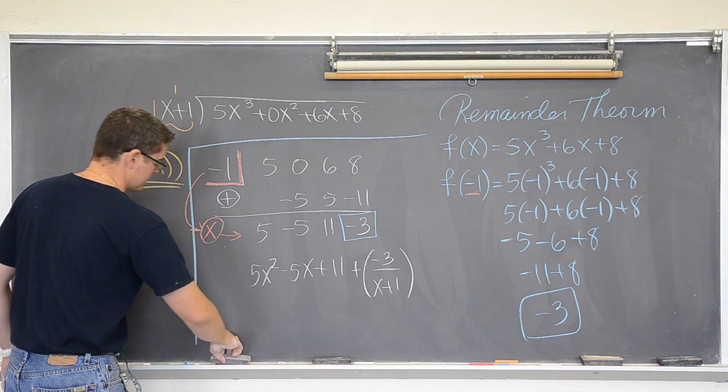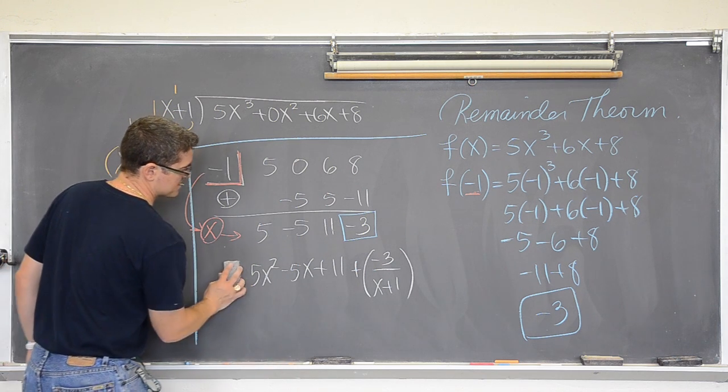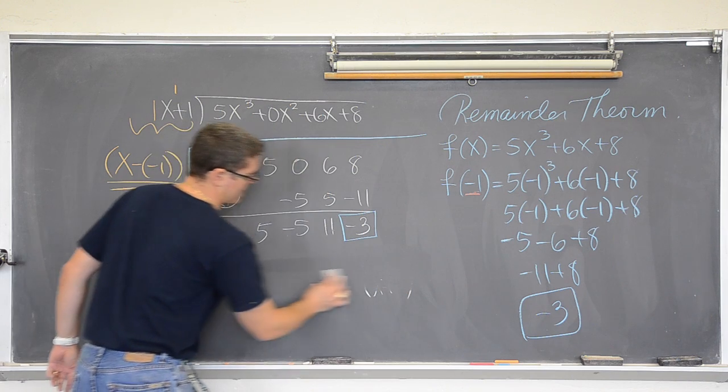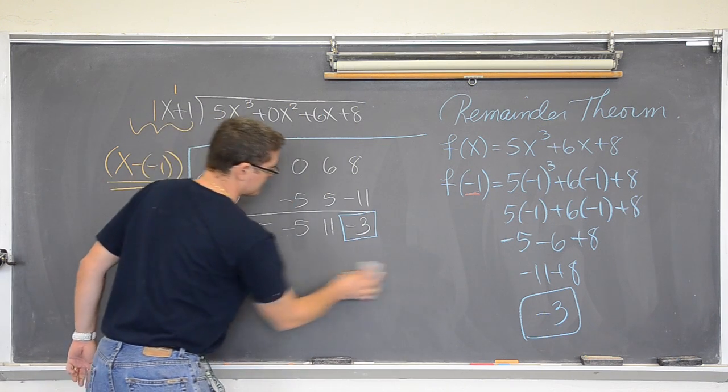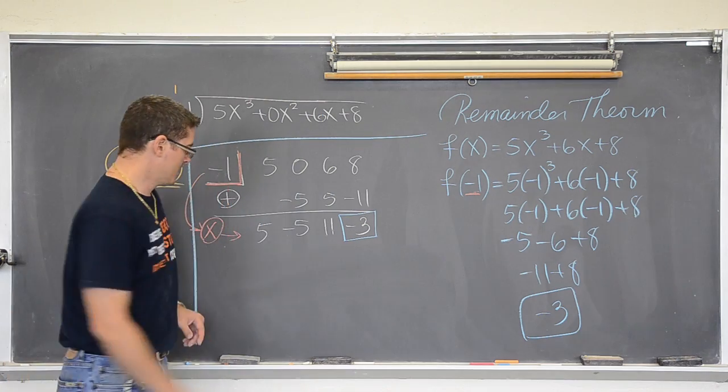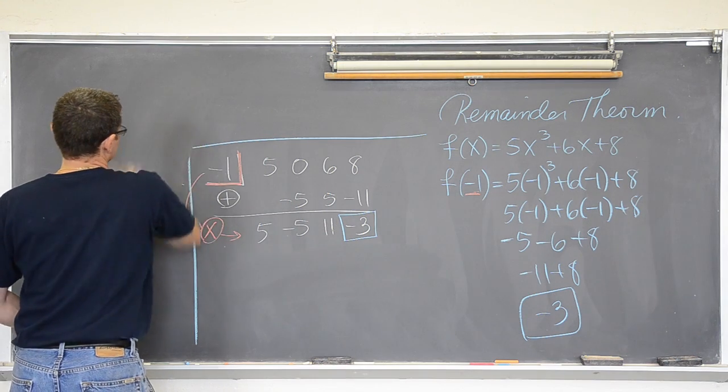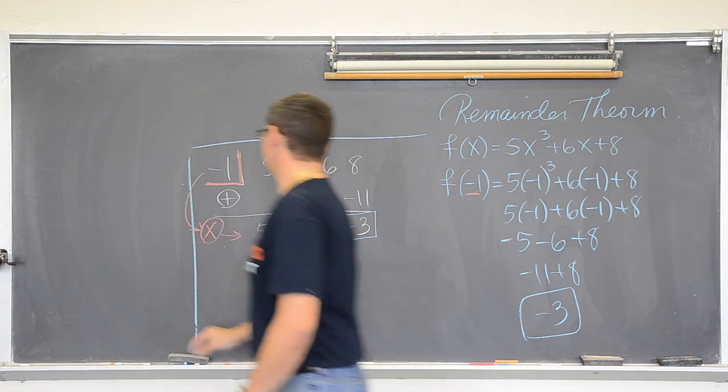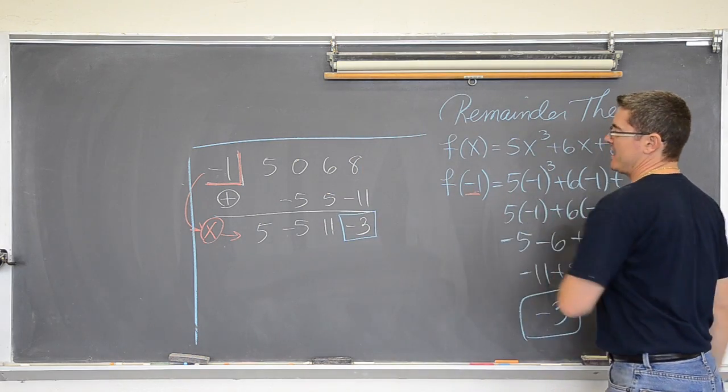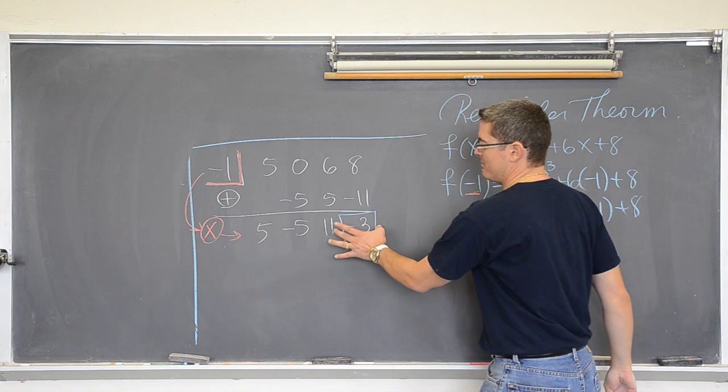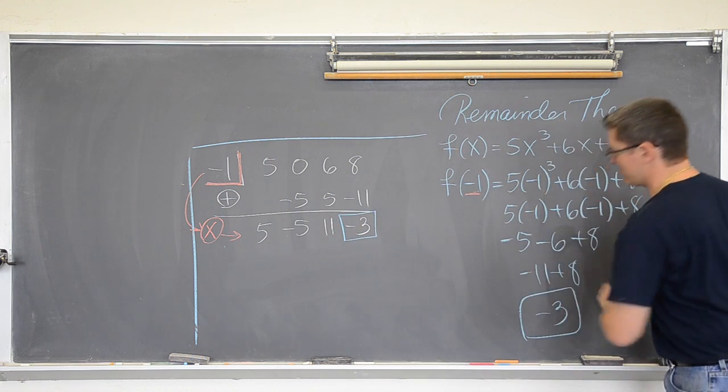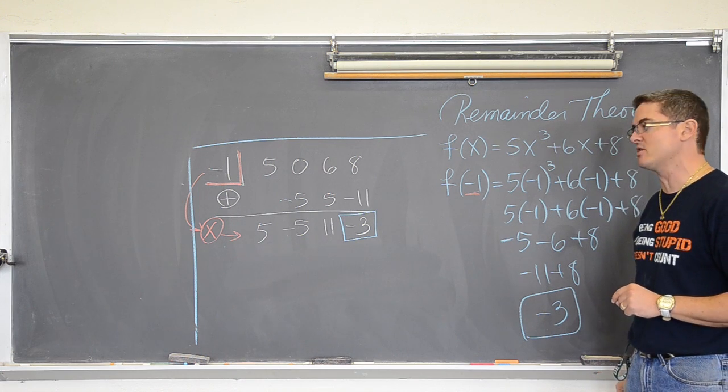Well, what you can do instead is set up synthetic division and do the process with synthetic division. And synthetic division is, with synthetic division, you can say, I want f of negative one so you synthetically divide by negative one. The remainder is the answer you would get from plugging that number into the function.